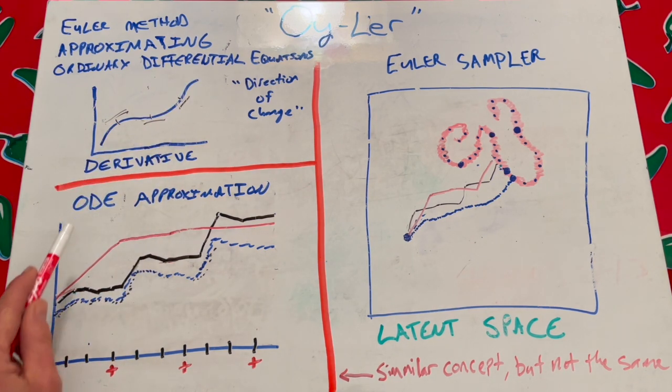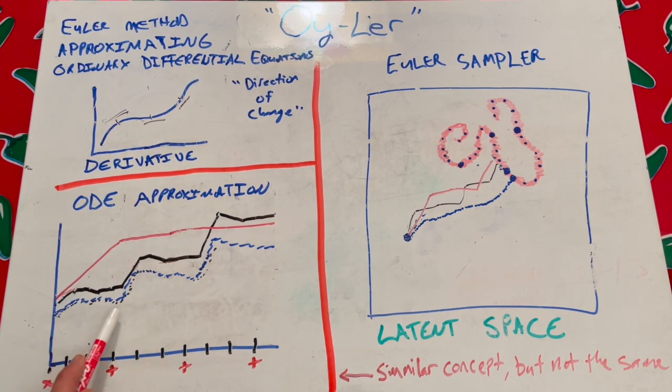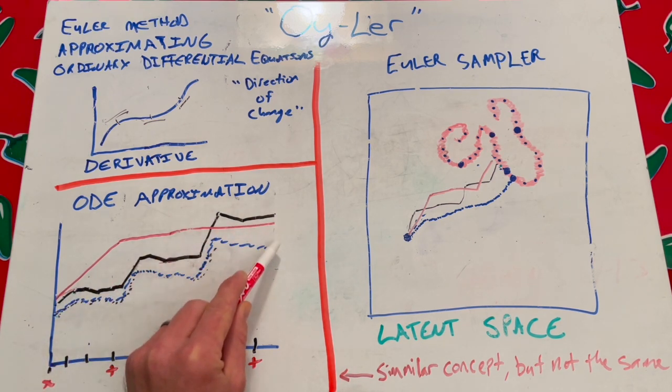So in ordinary differential equations, we don't actually know what this really looks like, but we know the derivative. So we would choose step sizes, and we would compute the derivative, and we would kind of walk it to the conclusion and you'd see there's some error.